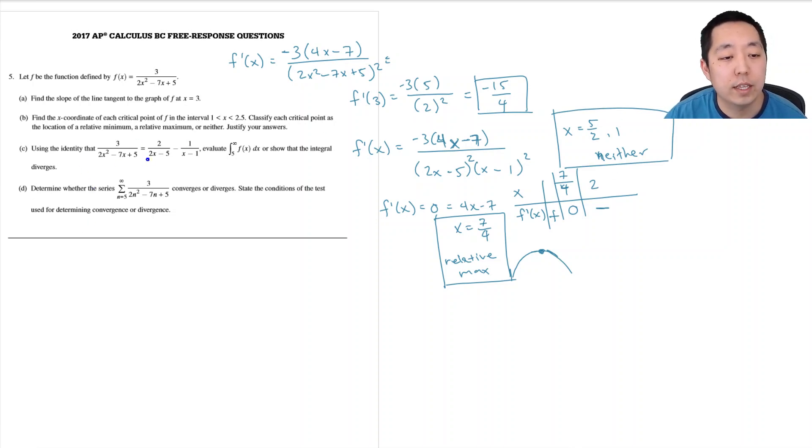C, using the identity that this is equal to that, evaluate the integral from 5 to infinity of f(x) dx. To show the integral diverges. So I want to do the limit as k goes to infinity. The integral from 5 to k. That's how you write an improper integral. And I'm going to do the integral of 2 over 2x minus 5 minus 1 over x minus 1 dx.